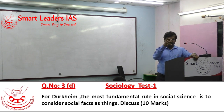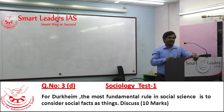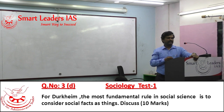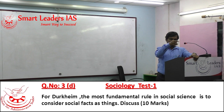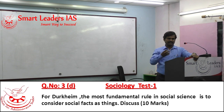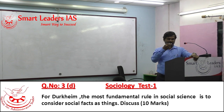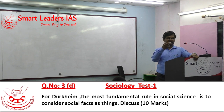So he treats suicide as a thing. By treating social fact as a fact, he wanted to bring objectivity into social science research. He wanted to impose neutrality in the mind of the researchers, because the challenge is a subject studying a subject. Hence there is a possibility of the subject being influenced by his own priorities. So he wanted to inject the tendency of objectivity into the mind of the researcher, which is why he says the first rule for a social science researcher is: treat social facts as things.